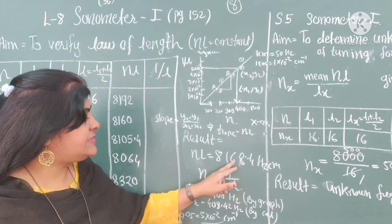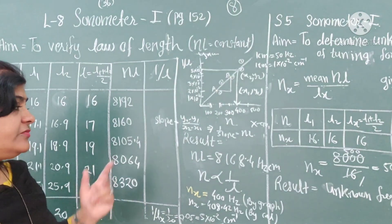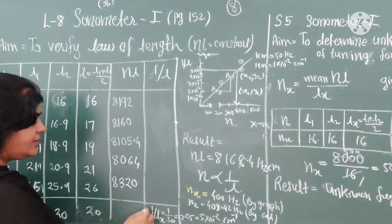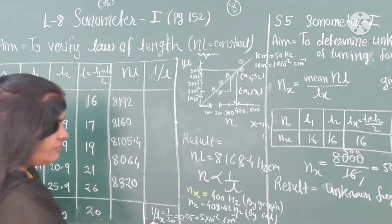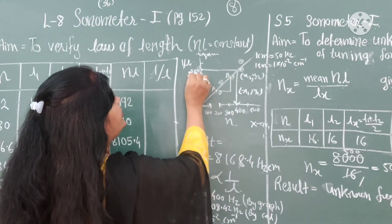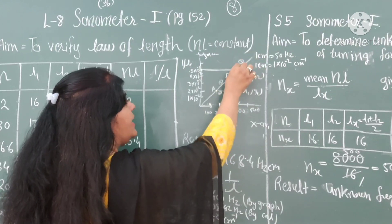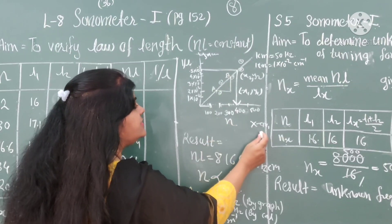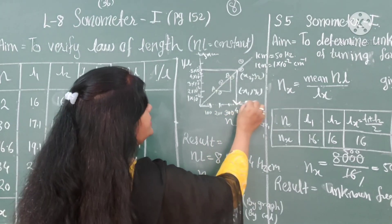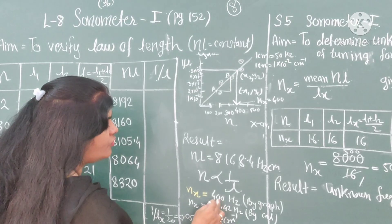From the graph, write the value of the slope and 1 upon slope — those two values will come approximately. Now to find the unknown frequency from the graph: 1 upon LX is already calculated as 1 upon 20, which equals 5 into 10 to the minus 2. Find where 5 into 10 to the minus 2 is on the Y axis, draw a horizontal line to where it touches the best-fit line, then draw a perpendicular to the X axis where the frequency intercept is 400.